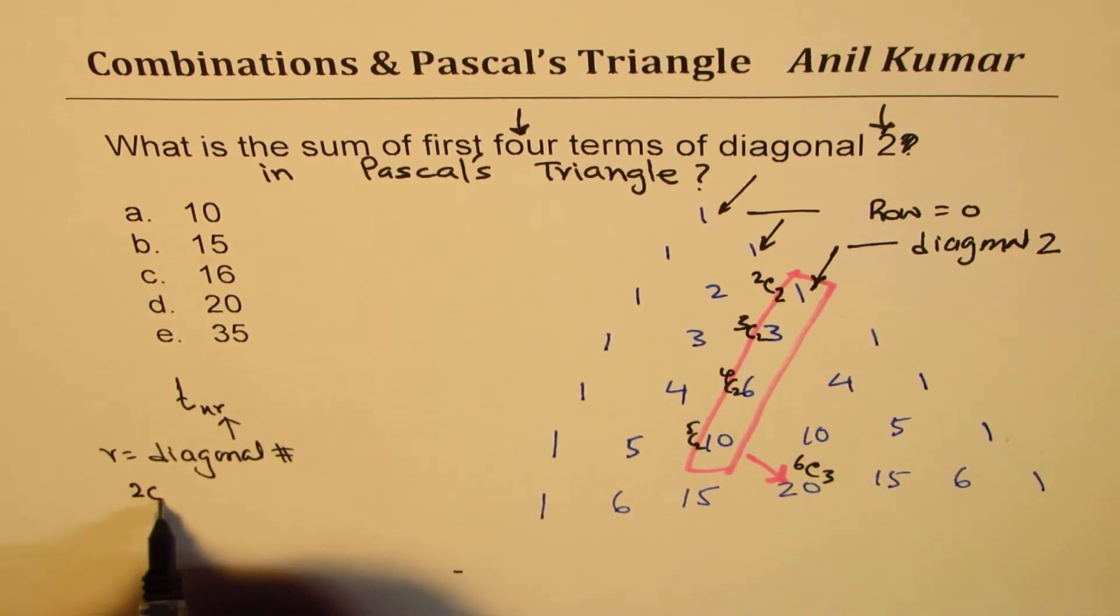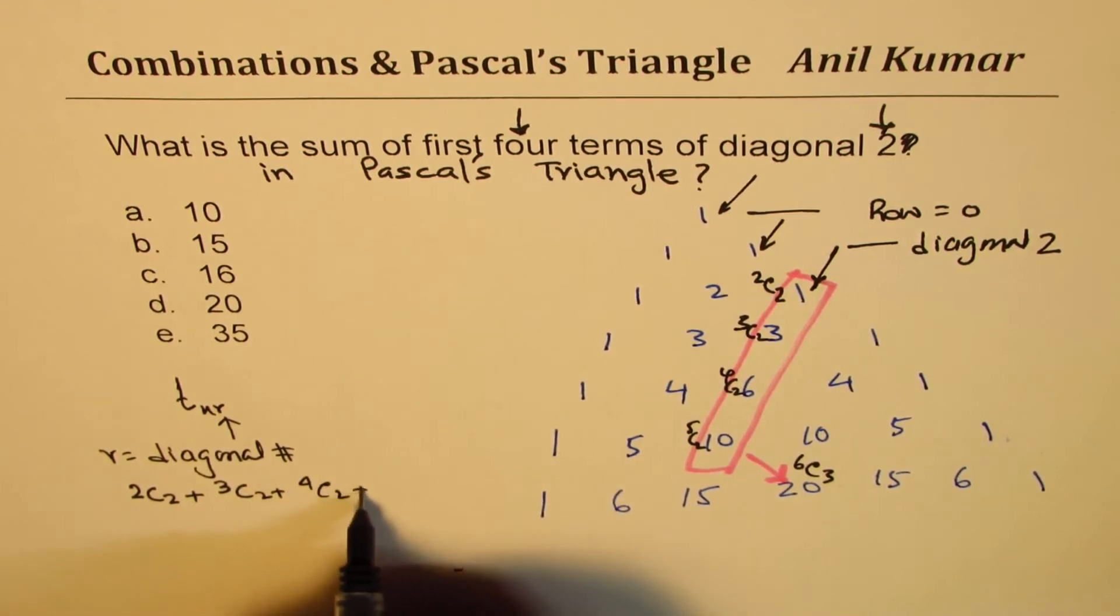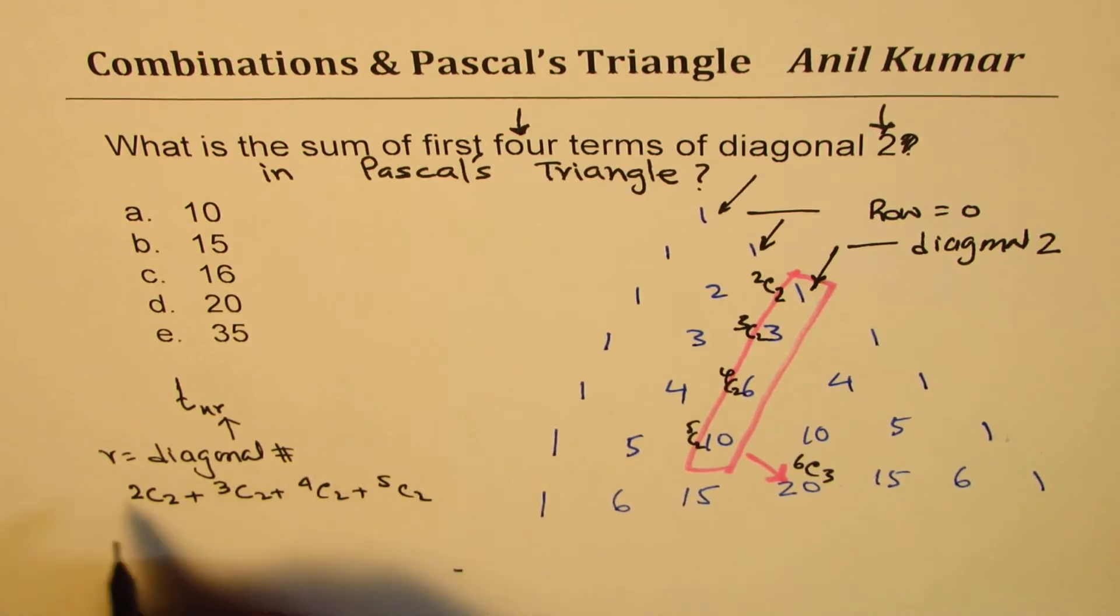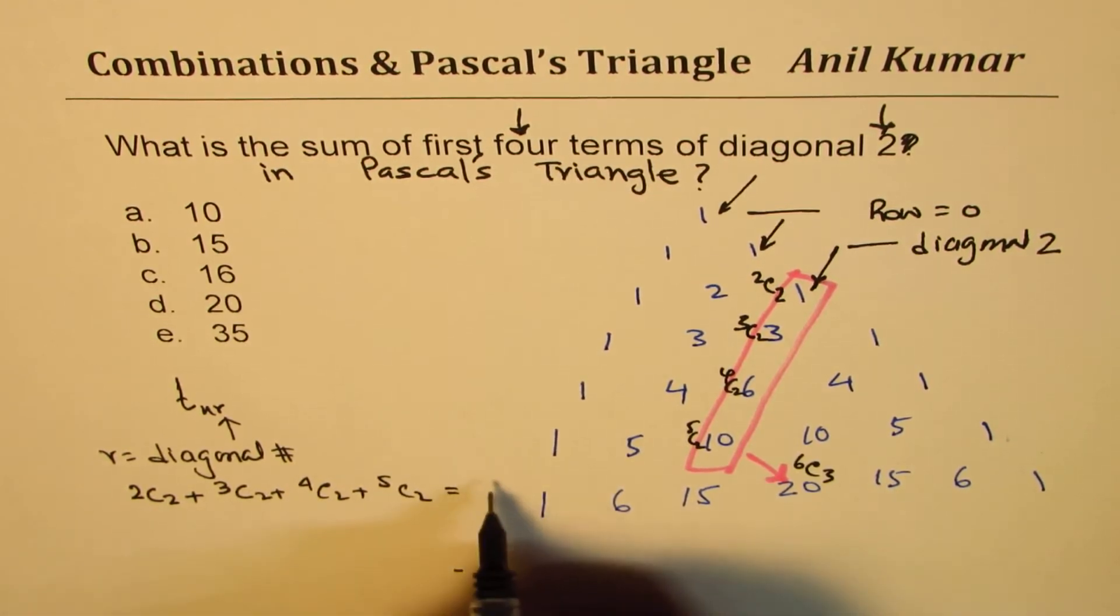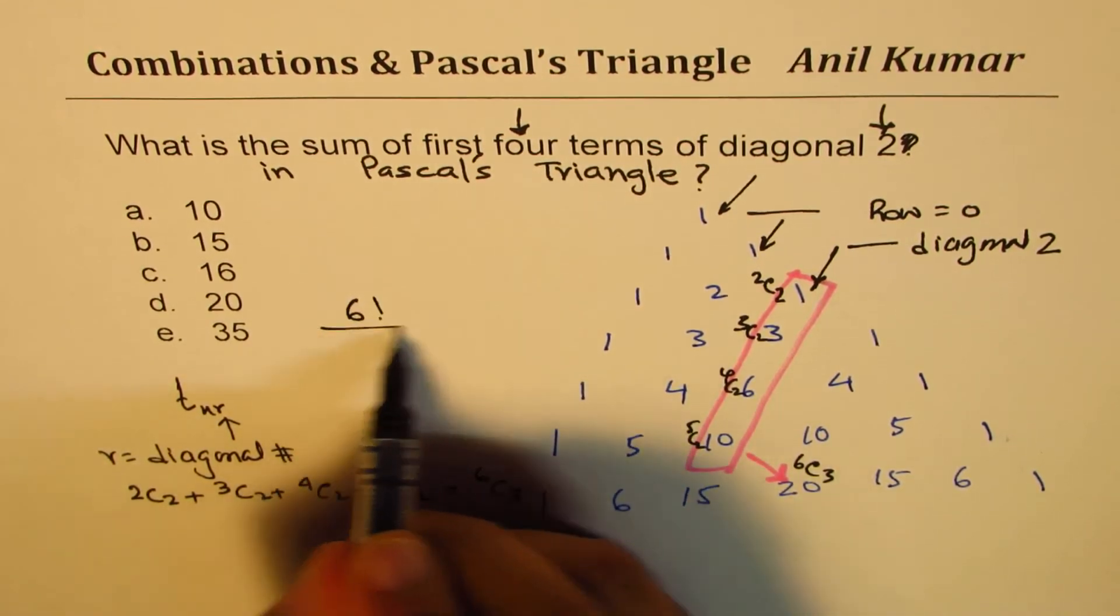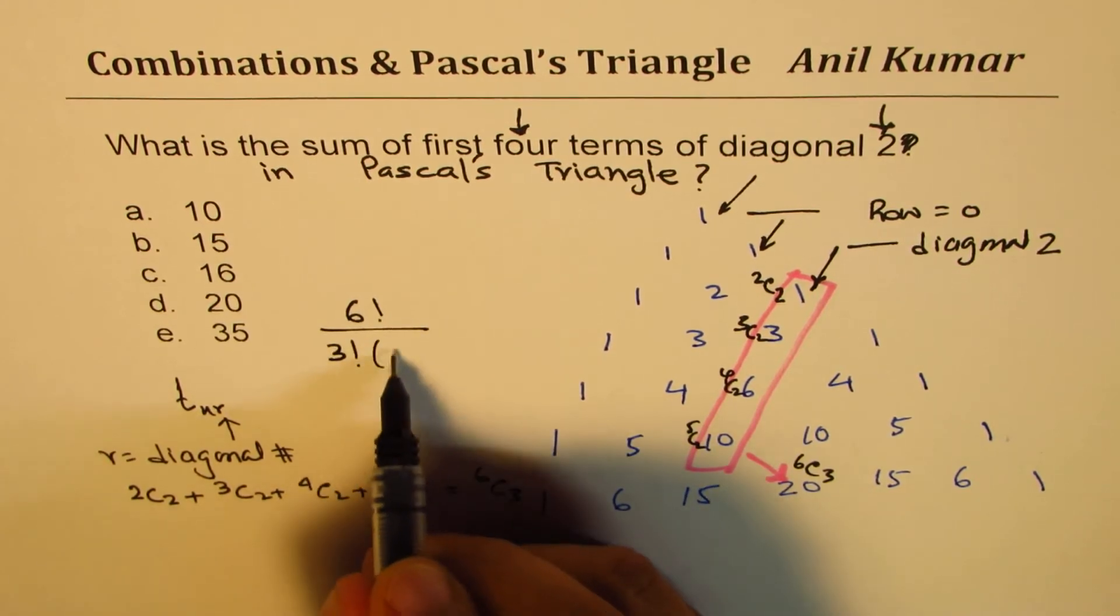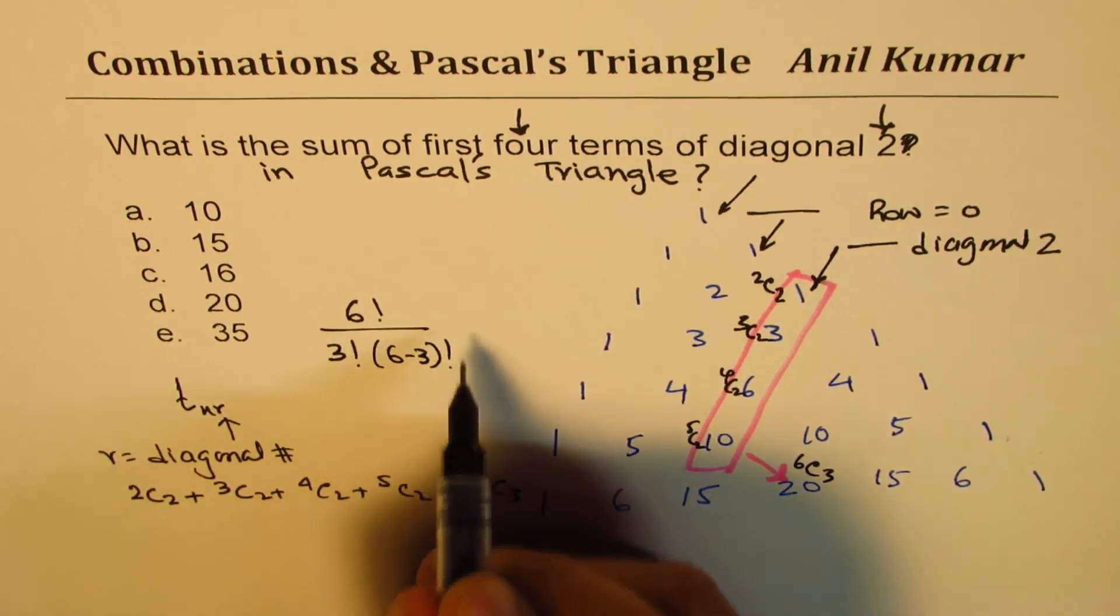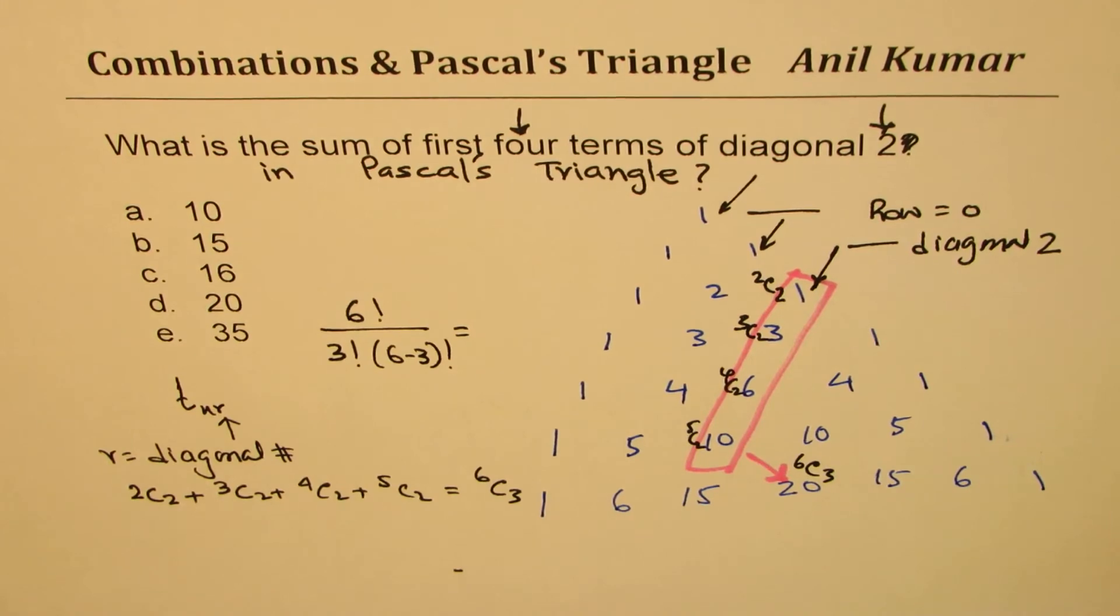Perfect. 6C3, easy to calculate. 6 factorial, right, over 3 factorial times 6 minus 3 factorial. I'm only taking time to make you understand, otherwise you realize this is very easy to calculate, right?